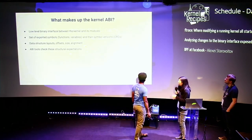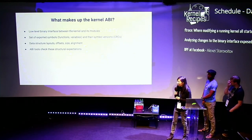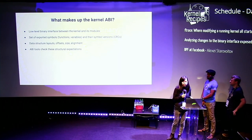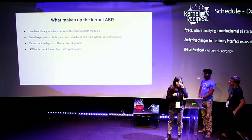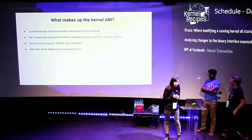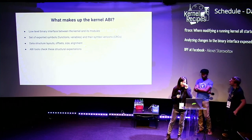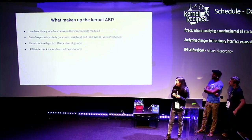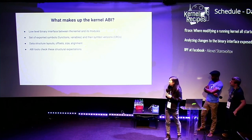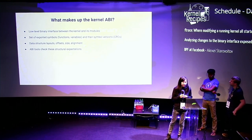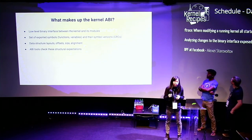So let's start with a general definition. What exactly is the kernel API, or kernel application binary interface? Generally speaking, this is the low-level binary interface between the kernel and its modules. It consists of a set of structural expectations — the availability of certain exported symbols and their symbol versioning information if ModVersions is enabled, how data structures are laid out, offsets of certain fields, size of structures, alignment, etc. The goal of ABI checking tools is to make sure we meet these structural expectations and that the modules and the kernel are in agreement.